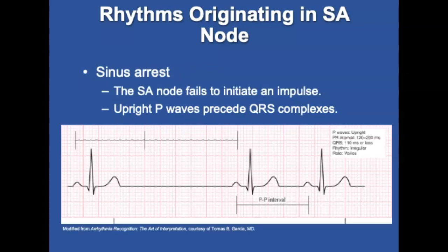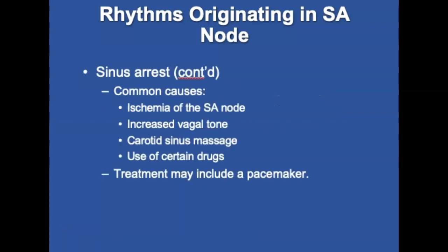Sinus arrest is still a rhythm originating in the SA node. The SA node fails to initiate an impulse, which eliminates the P wave, QRS complex, and/or T wave from one cardiac cycle, then resumes normal functioning. Atrial and ventricular rates are usually within normal limits when the rhythm is regular, except for the absence of complexes. Possible causes include ischemia of the SA node, increased vagal tone, or carotid sinus massage. Occasional episodes are not significant unless the heart rate drops below 60 beats per minute. Treatment may include a temporary pacemaker in the field or a permanent pacemaker placed in the hospital.